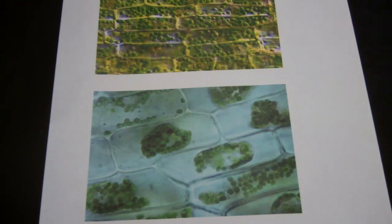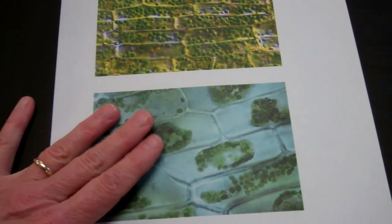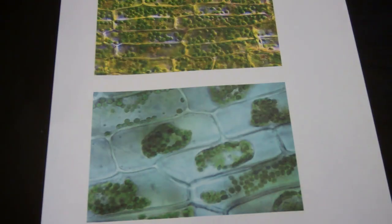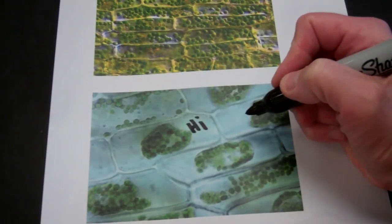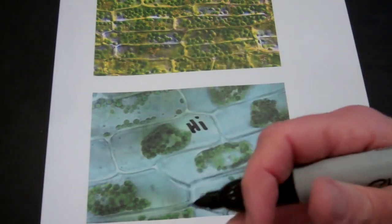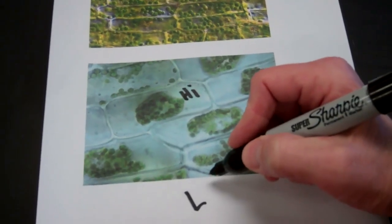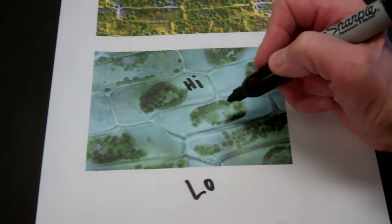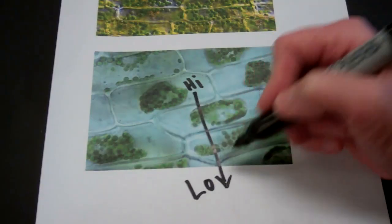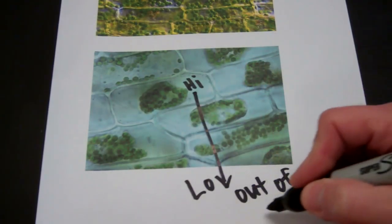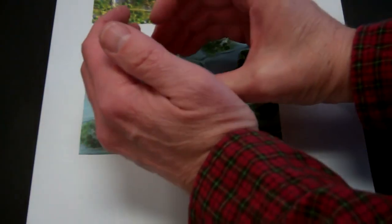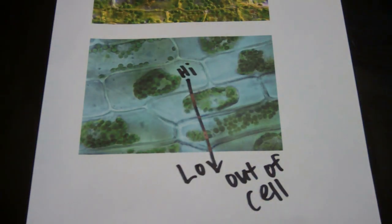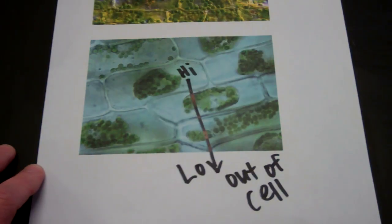So, when the cell looks like this, this tells us that water has moved out. Well, why did it move out? There was a higher concentration of water on the inside of this cell and a lower concentration outside of the cell. And so, the water is going to move from high to low. That means it's moving out of the cell. And as it moves out of the cell, the cell membrane shrinks into the middle of the cell. So, that is what happens when we put our cell into salt water.